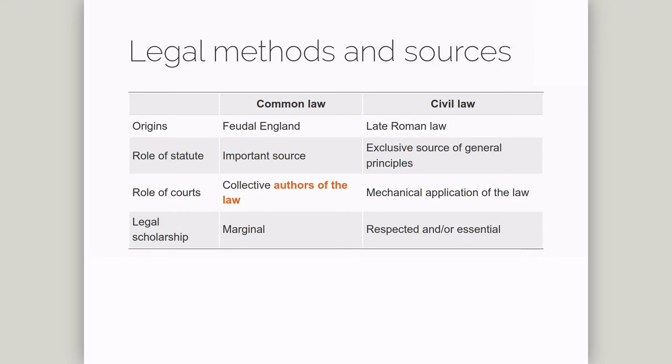Because judges have a creative role in common law systems, academic lawyers tend not to have much influence. In code law systems, it is academics who have that more influential role. They exercise that role by writing commentaries on the different codes and their application.